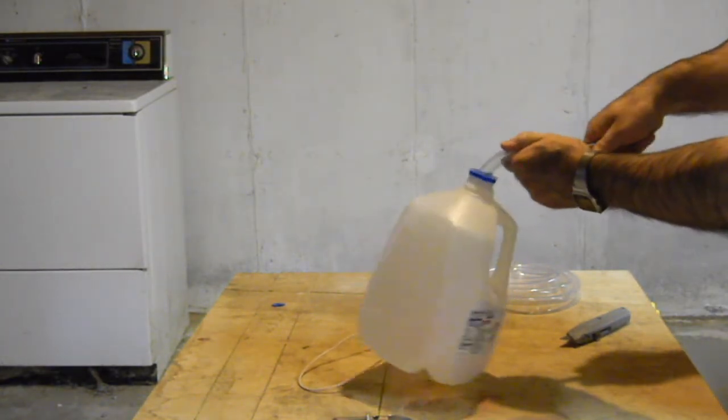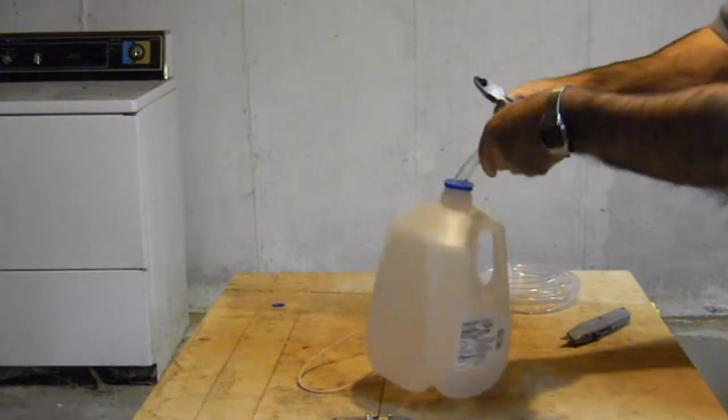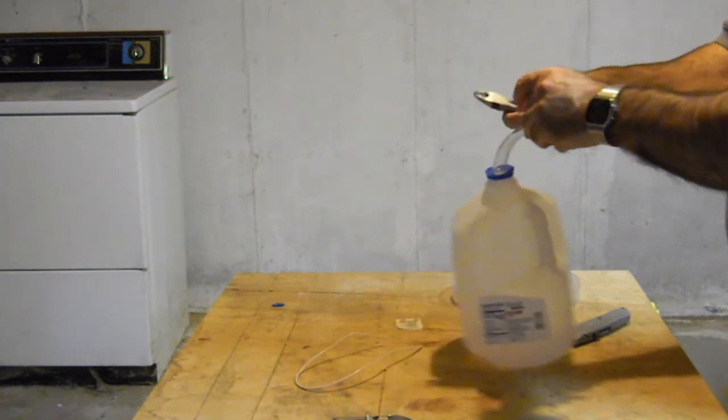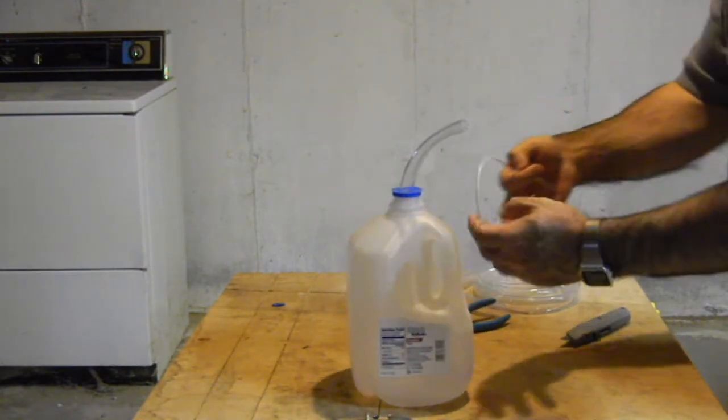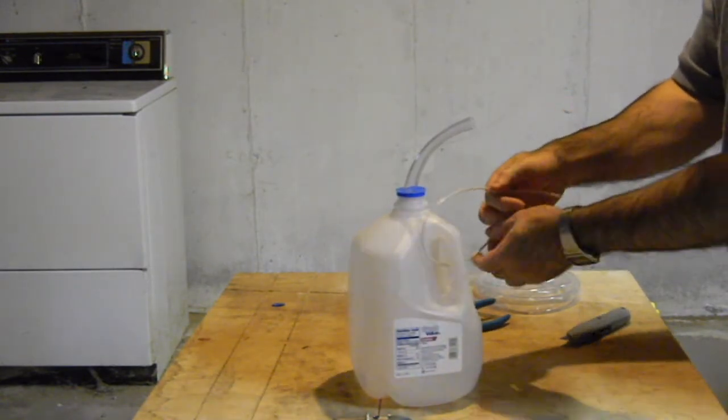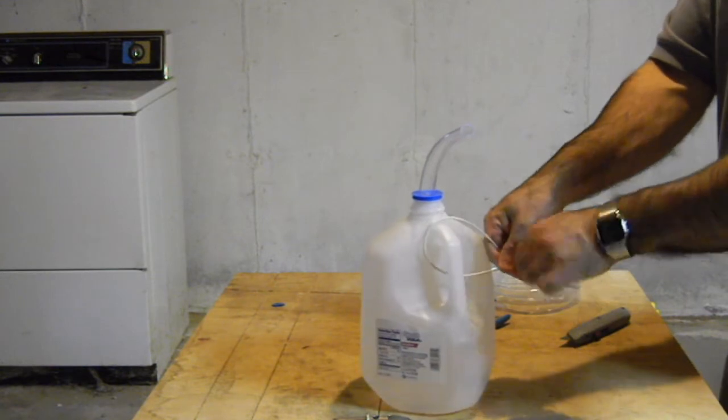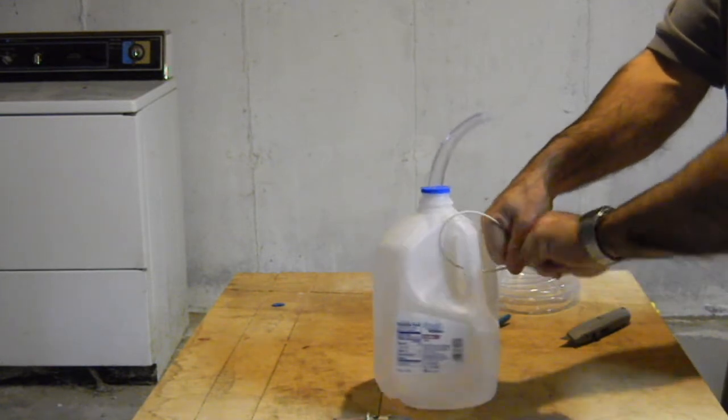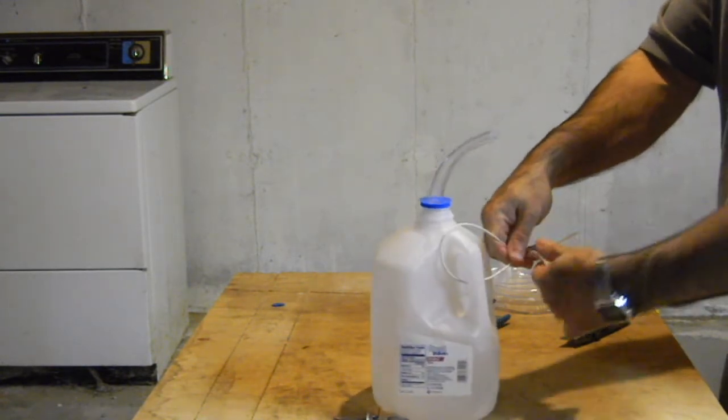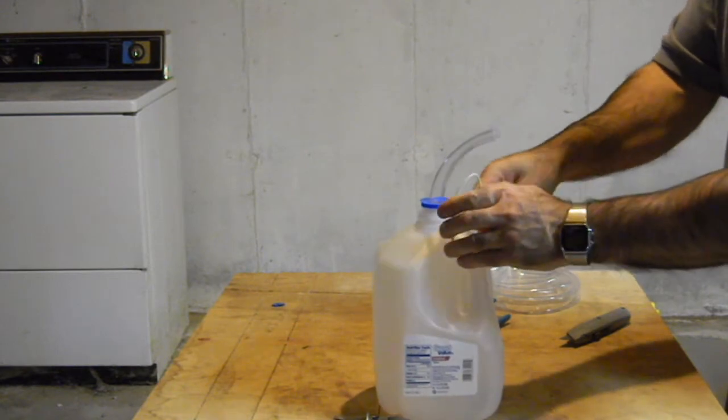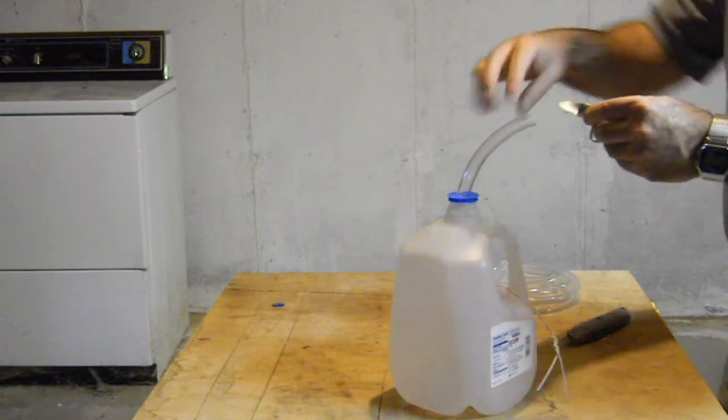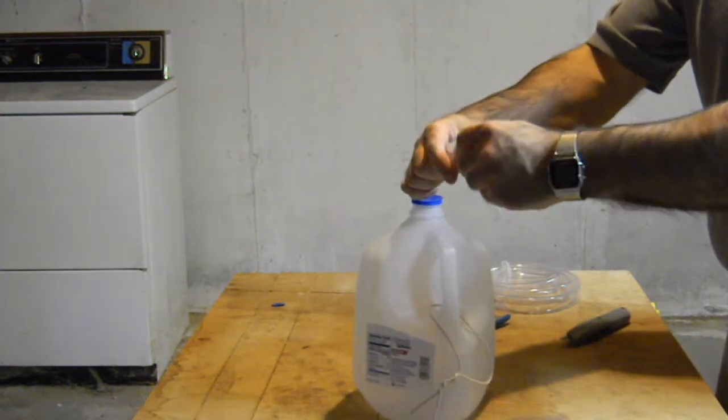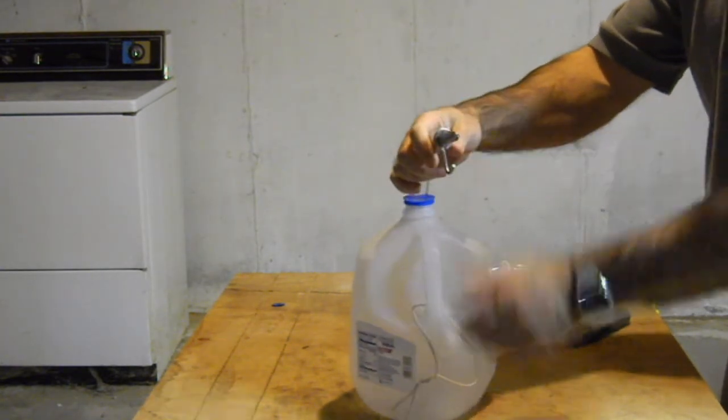I'll cut the top open here. Then we take our wire, and we wrap that around. The wire is used to hold the jug onto the tree. Take my spile, which goes in tubing.